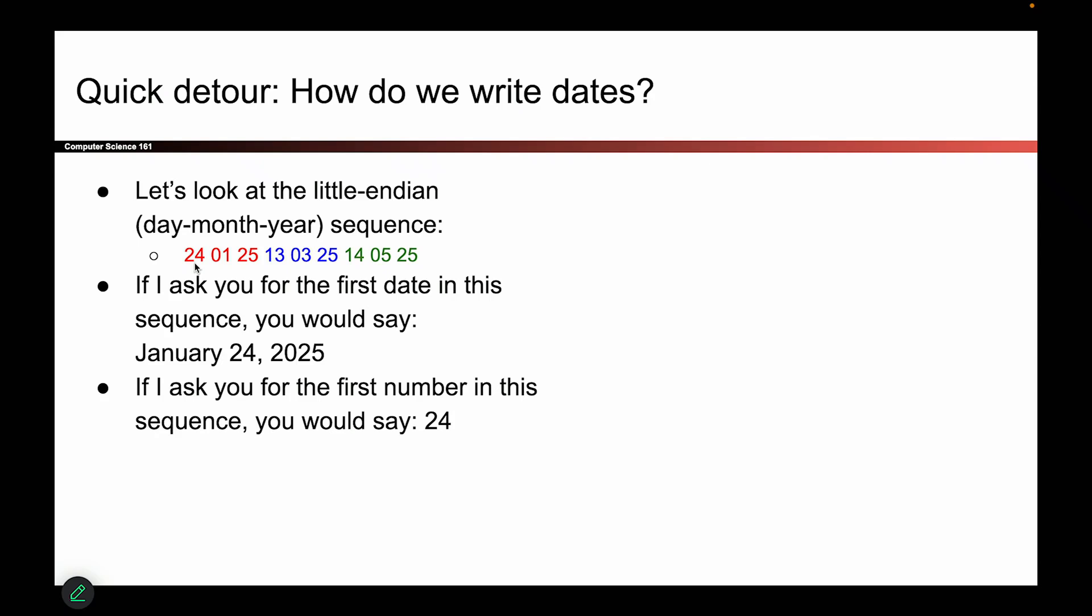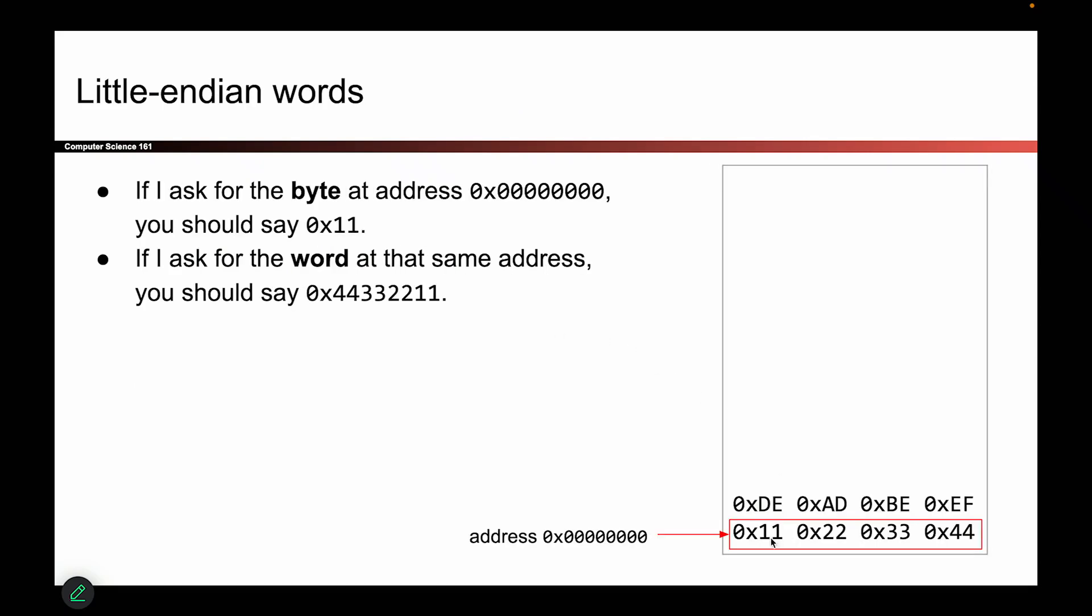So in the same way that I can also read this as just raw numbers, I can also read these bytes in memory as raw numbers. So if someone says, hey, give me the byte at address 0, you would say, well, it's 1-1. There it is. That's the byte living at address 0.